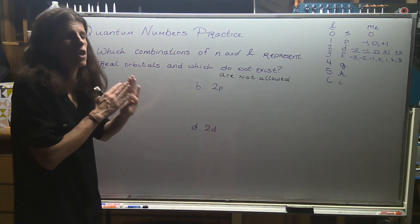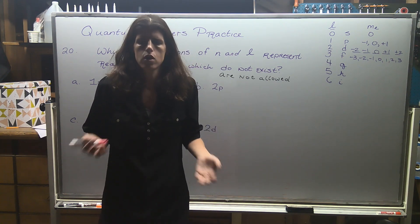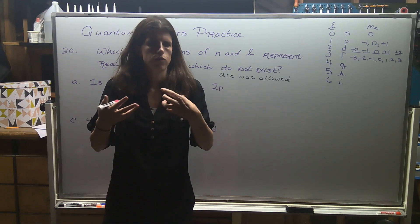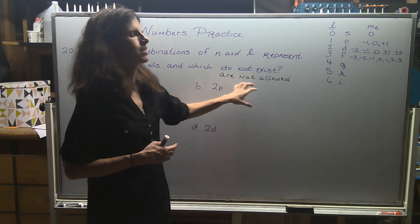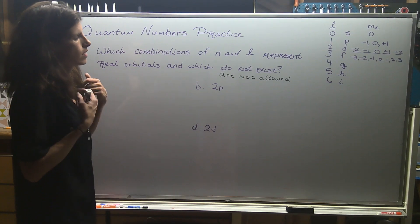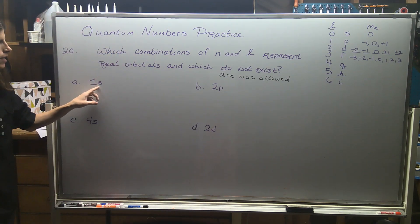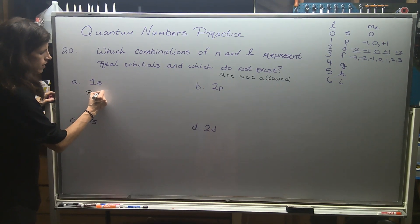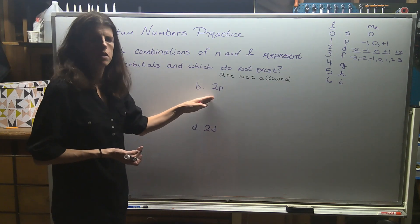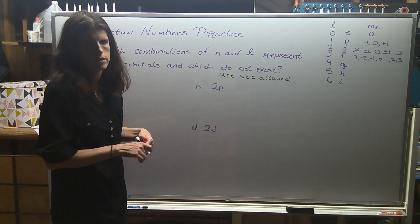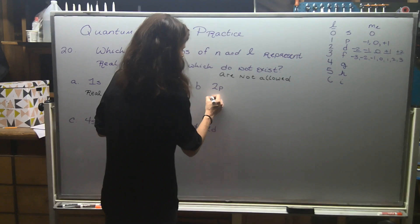There are some combinations that just never happen. Thinking back to electron configurations, there's no such thing as a 1p orbital — p orbitals are not allowed under principal quantum number 1. You just don't see p orbitals in the first row of the periodic table. We're trying to identify things that aren't allowed and will never exist. So 1s is real — that's the orbital hydrogen and helium have their valence electrons in.